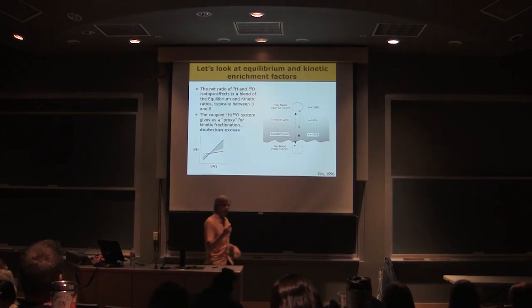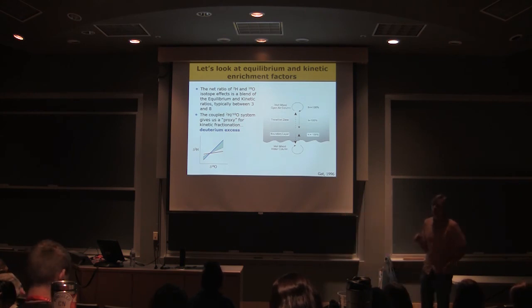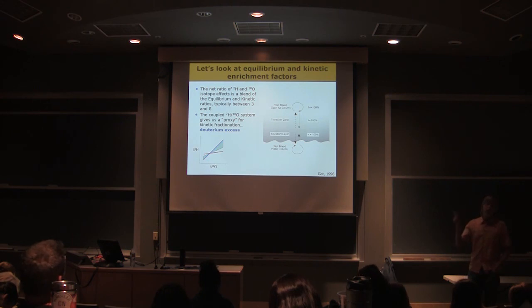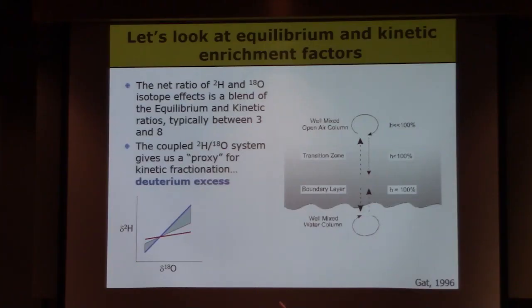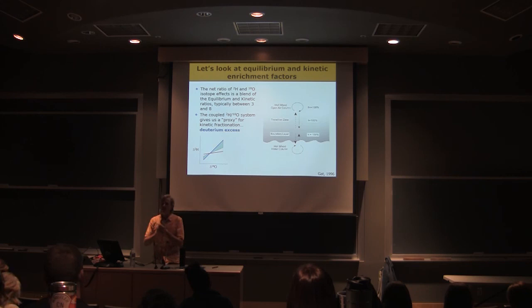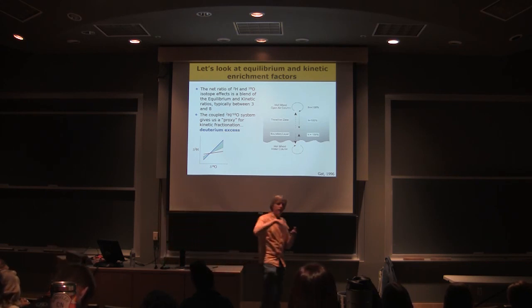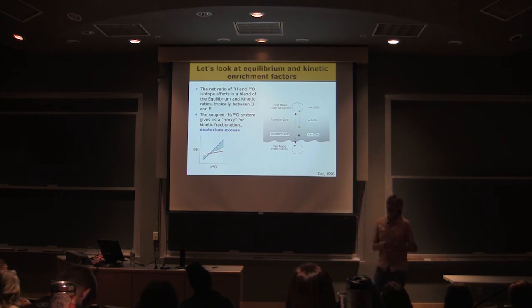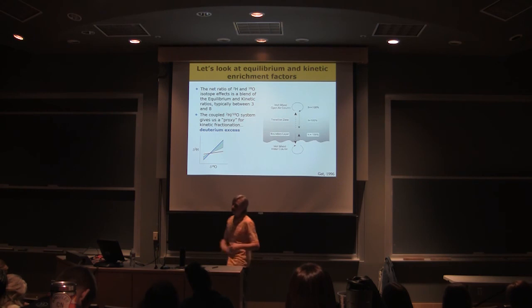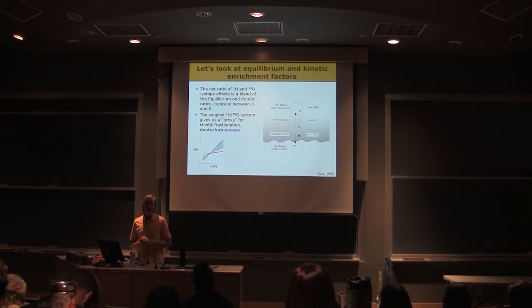Turns out in the real world when we put the two together and actually look at real world evaporation, combining the equilibrium effect that's always there with the kinetic effect, which is expressed differently in different systems depending on the conditions, we end up with a range of slopes for the evaporation process that goes between three and seven-ish. It tends to be a lower slope for soils, for example, where you have a porous medium and the diffusion is very well expressed because you've got stagnant air in that soil column, and so really the only way to move things is through diffusion. It tends to be a higher slope for large water bodies that are exposed and there's a lot of wind and turbulent mixing, but we get a range of values. The slopes are lower than eight.